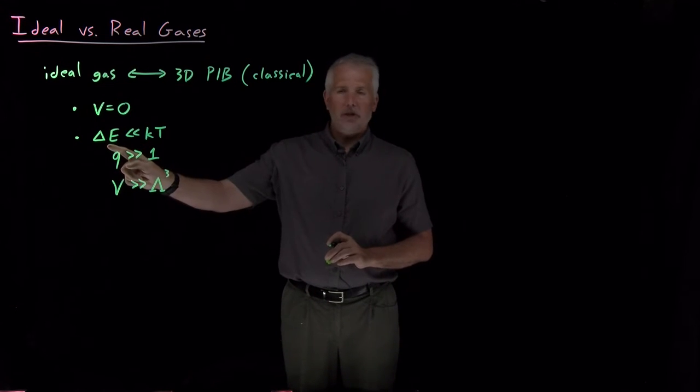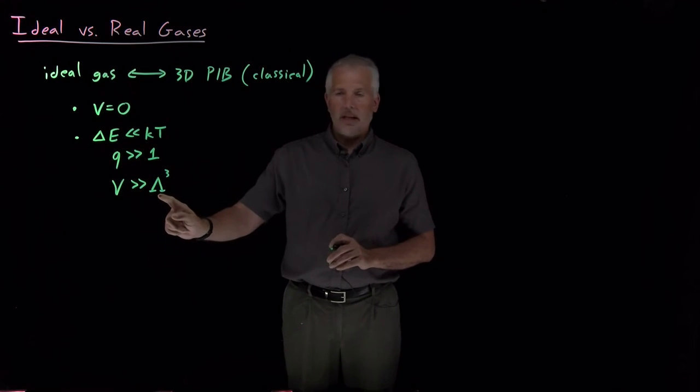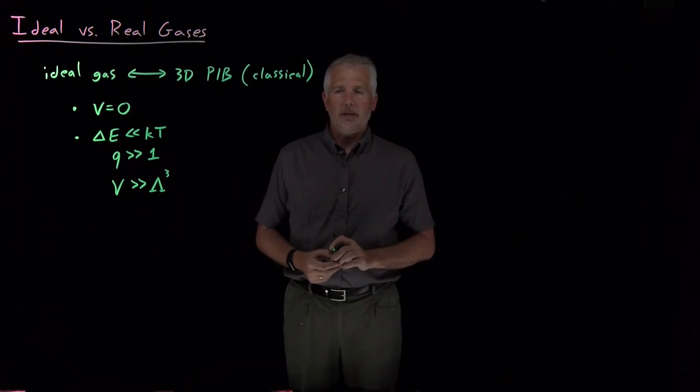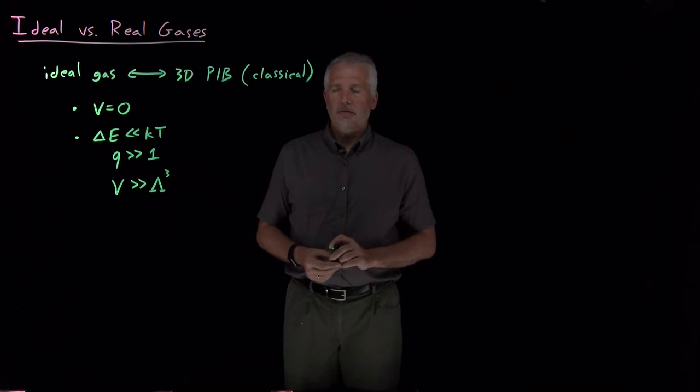Either we need very small spacing between the energy levels, a large partition function, or molecular sizes that are very small compared to the box that we confine them into. So those set of assumptions are what define our ideal gas model and led to our result, for example, that PV equals nRT or PV equals nKT.